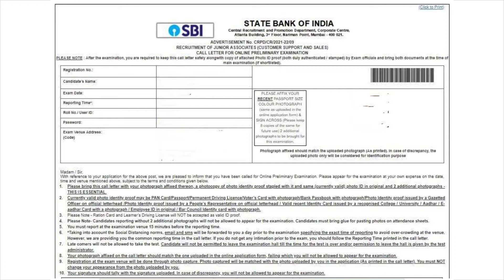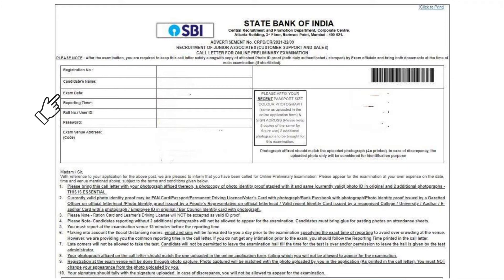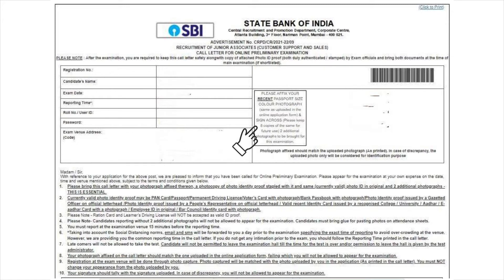Candidates must check the details mentioned on the SBI Clerk Admit Card. These include the registration number, name of the candidate, exam date, roll number or user ID, password, exam venue address, and space for photograph and signature.